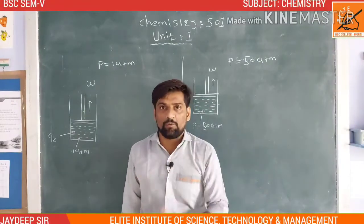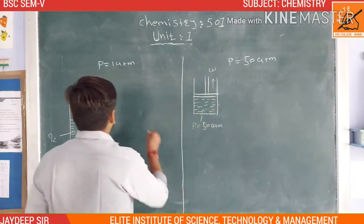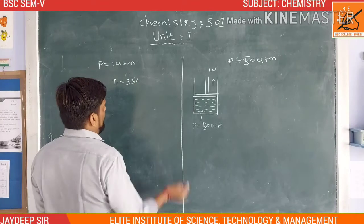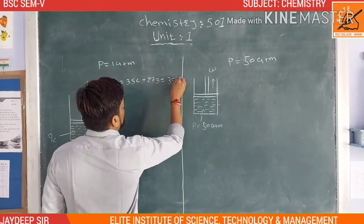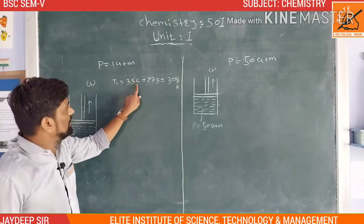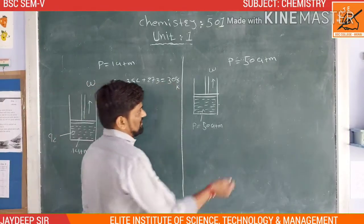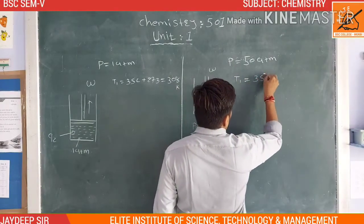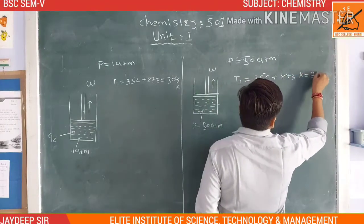The sink temperature T1 is equal to 35 degrees Celsius. We convert Celsius to Kelvin: T1 equals 35 plus 273, which gives 308 Kelvin. In both cases, the sink temperature remains 308 Kelvin.